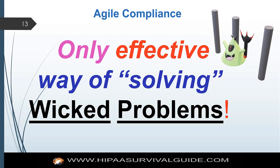A wicked problem is a problem that has more organizational and social complexity than it has technical complexity. The complexity that you're going to find really challenging in implementing a HIPAA initiative is going to be found in your organization — how do you convince the executive team what to do? How do you get them to review policies and procedures? How do you get them on board with training? All these things are organizational problems, not necessarily technical problems.